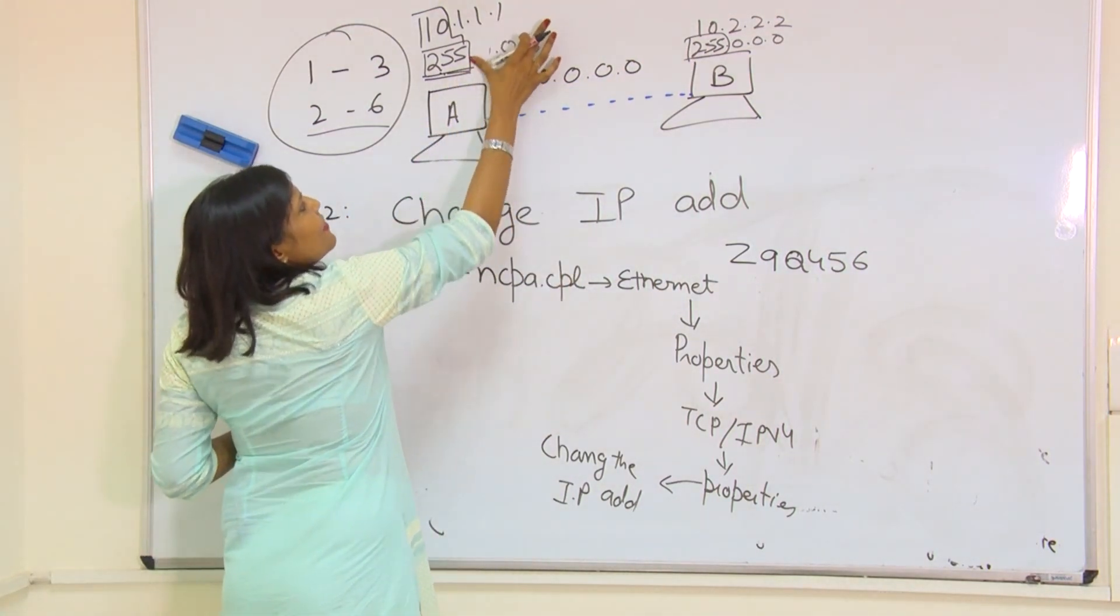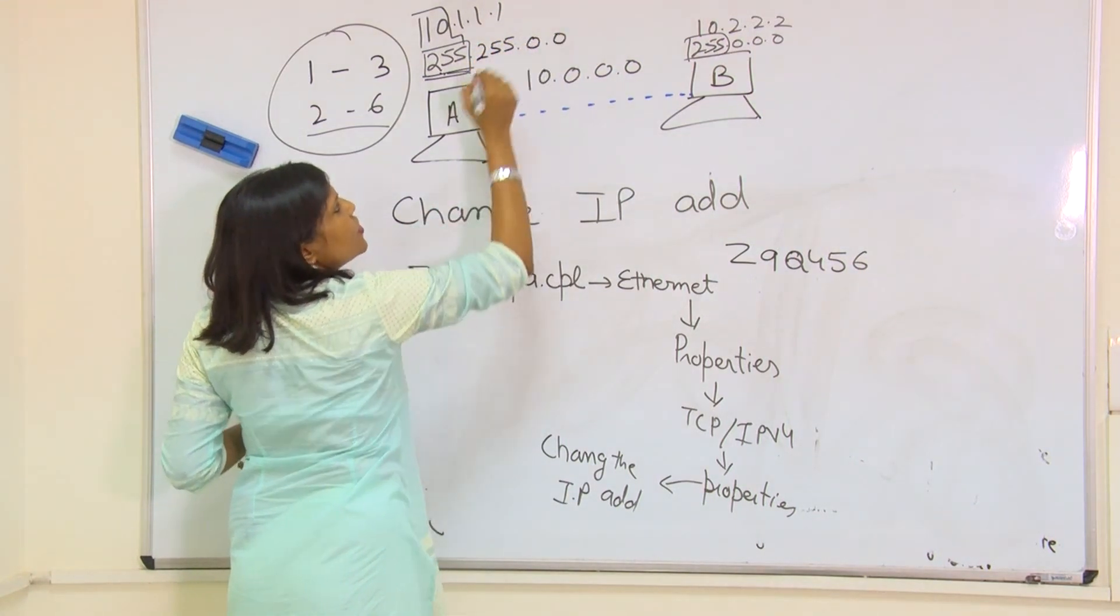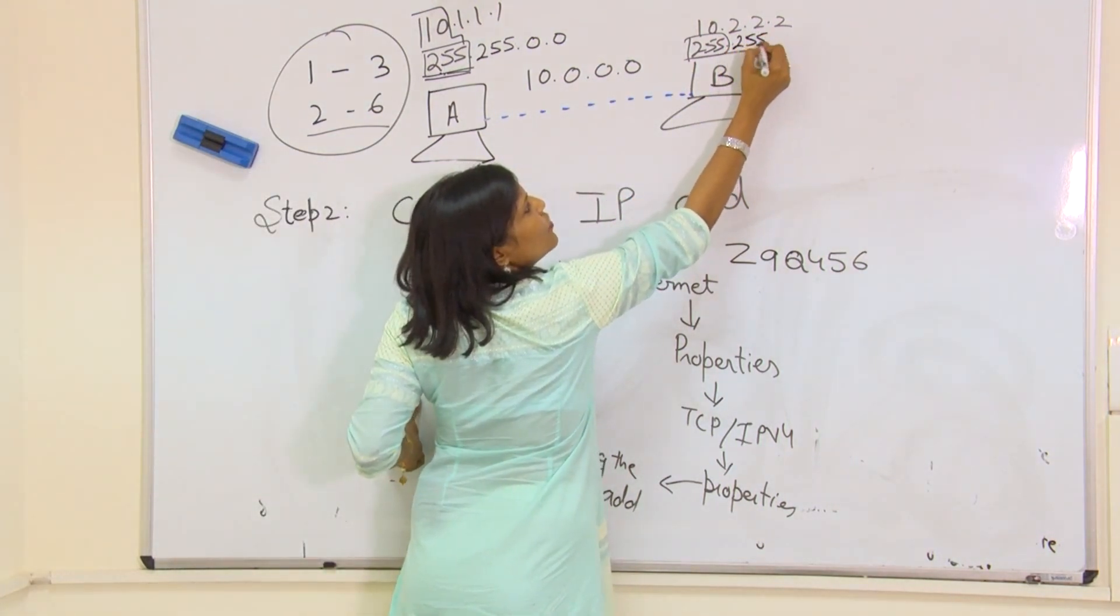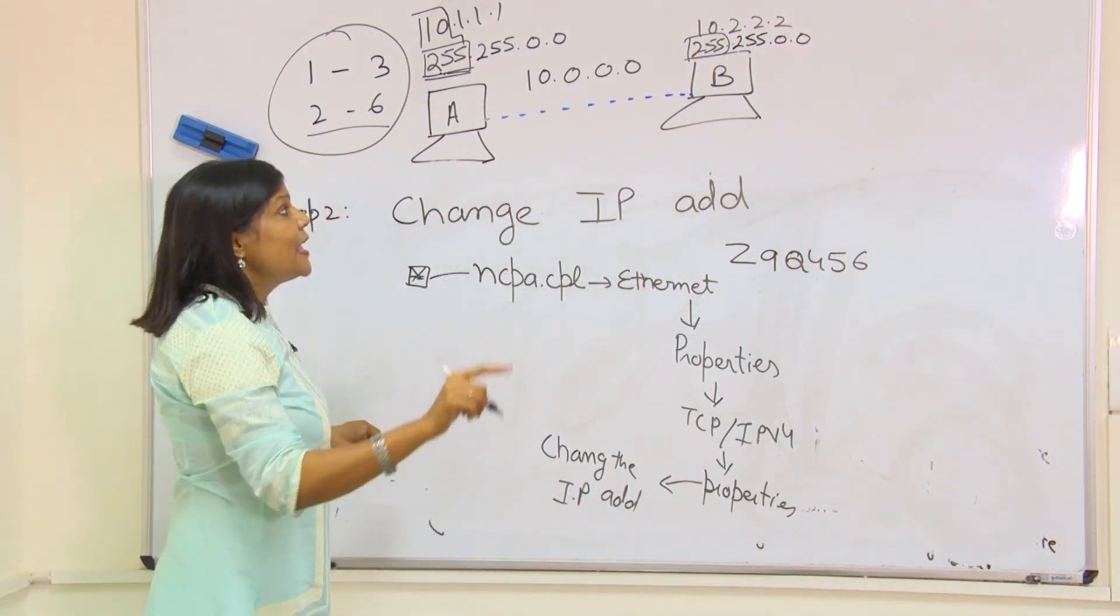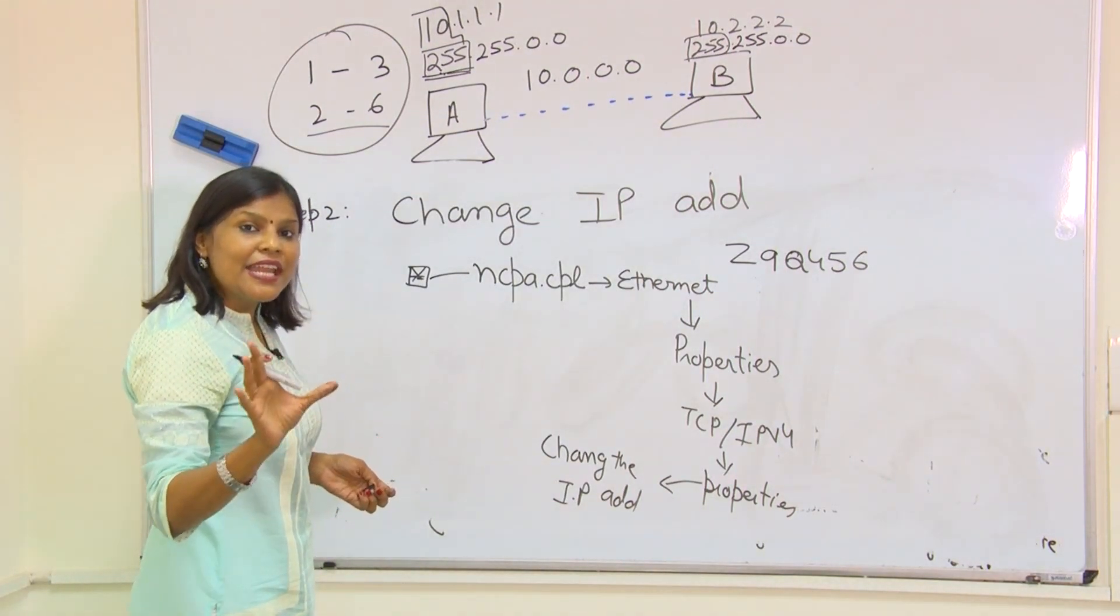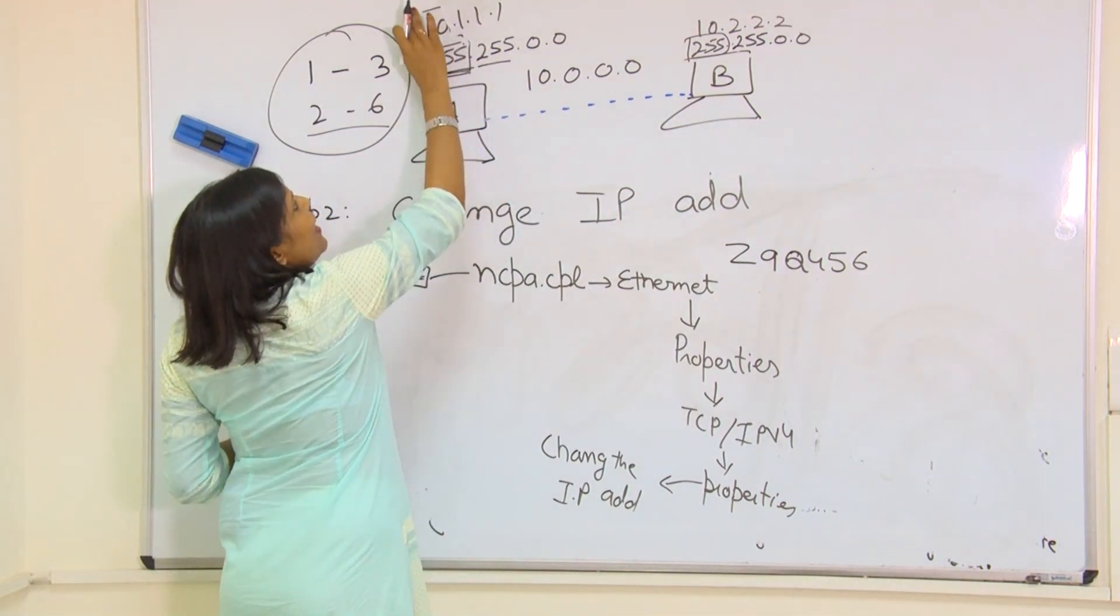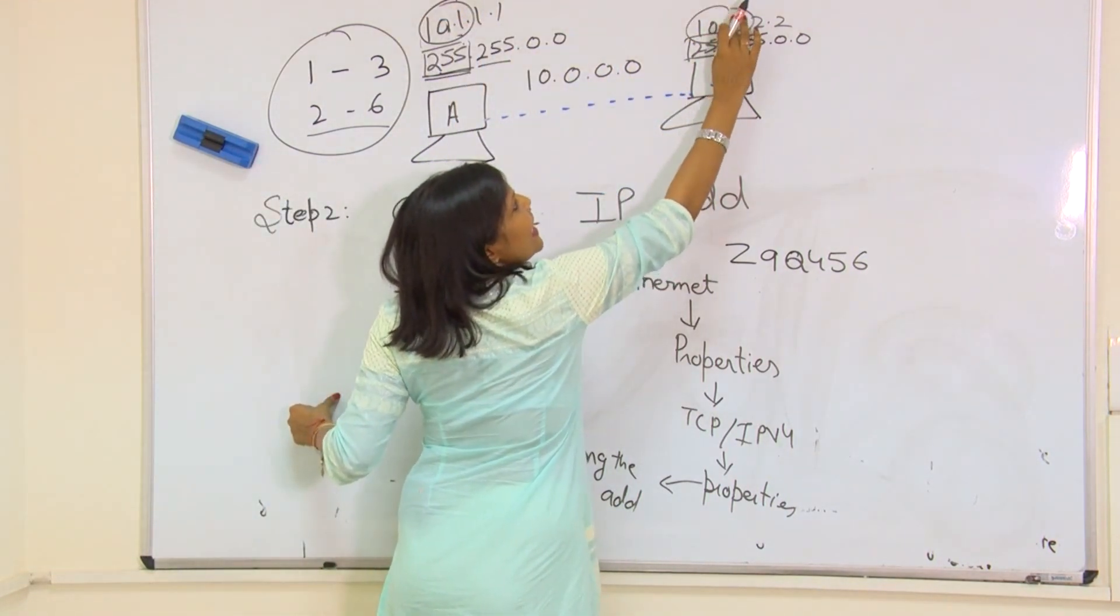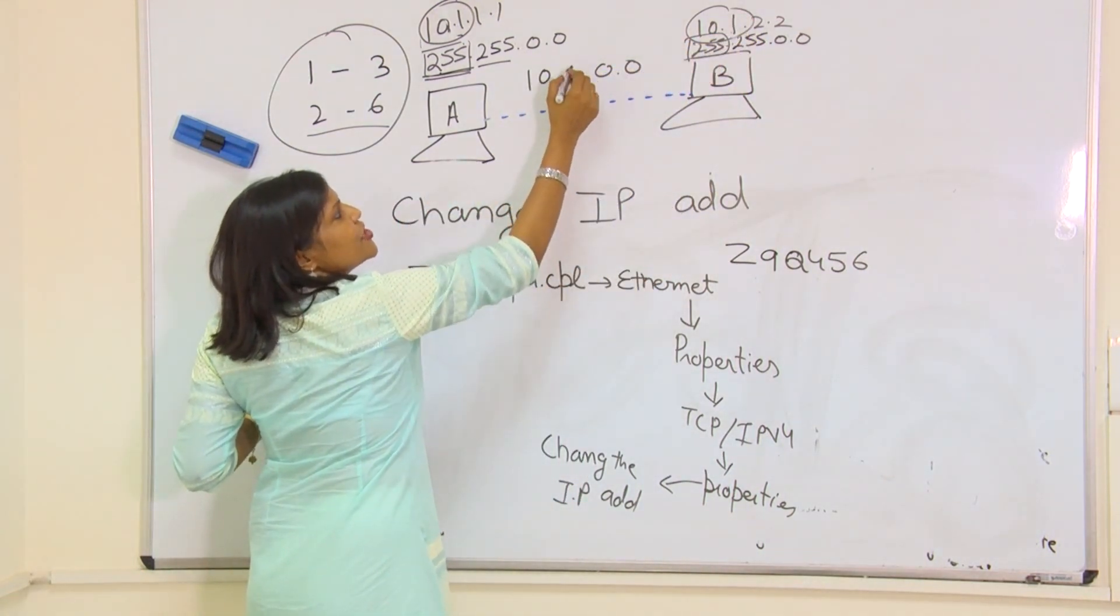Now if I say my subnet mask is 255.255.0.0, first of all I have to keep the same subnet mask on both sides. Similarly, I have said that network address should be the same and subnet mask will decide our network address. So 255.255 here means that I have to fix these two octets on both sides the same. This will become our network address.